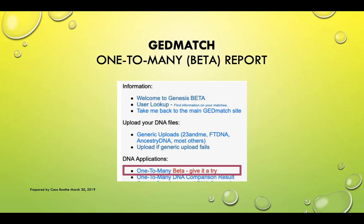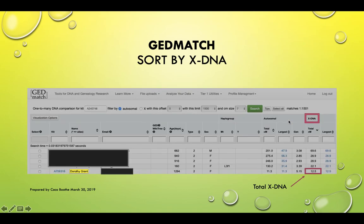If you use the regular one-to-many DNA comparison result right below the beta, it does not show or yield any XDNA information. So you have to go into the beta.